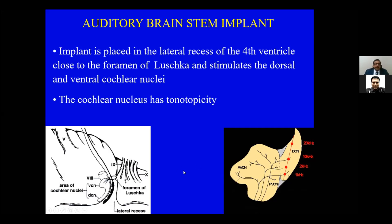The cochlear nucleus also has tonotopicity, just like the cochlea itself. However, what is different between the tonotopicity of the cochlea and the brainstem nuclei is that cochlear tonotopicity is mainly linear — like a piano. You stimulate the base of the cochlea and get high frequency stimulation; you go to the apex and get low frequency. It is essentially an upside-down piano. But in the case of the brainstem, it is a little more complex.